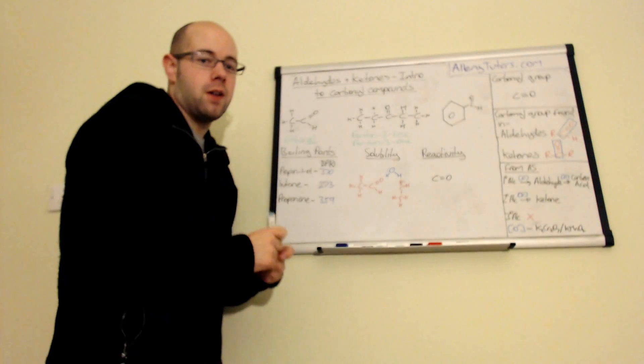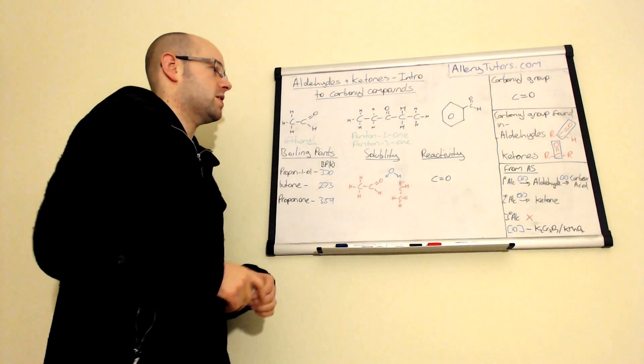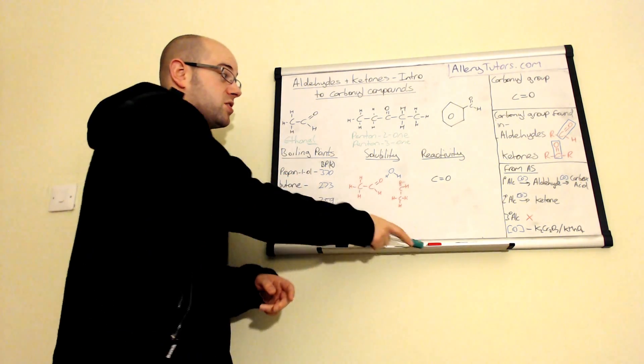If it was on the end, obviously that won't be a ketone. That would be an aldehyde because an aldehyde will always have a carbonyl group on a terminal carbon, either on either side of the molecule.